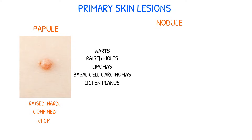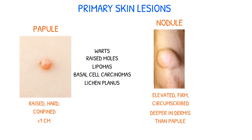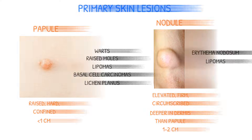A nodule is an elevated, firm, circumscribed lesion that is deeper in the dermis than a papule, and it's one to two centimeters in diameter. Some examples of nodules include erythema nodosum and lipomas.